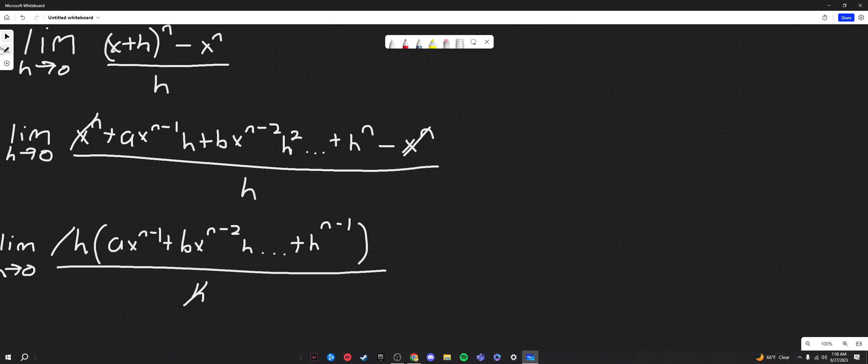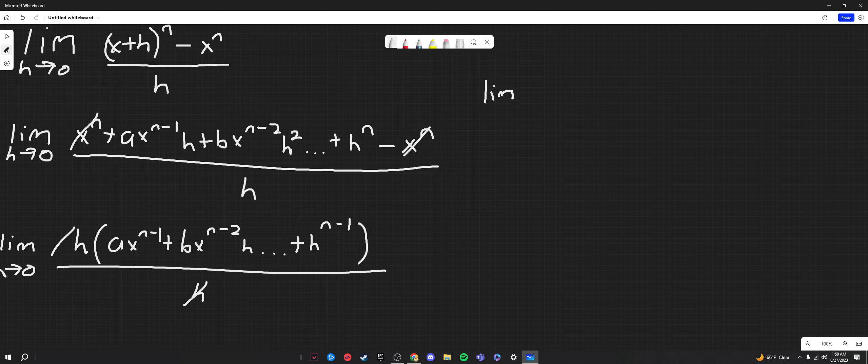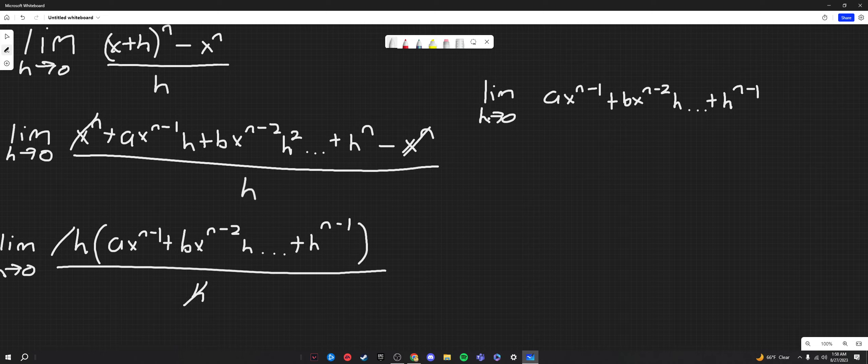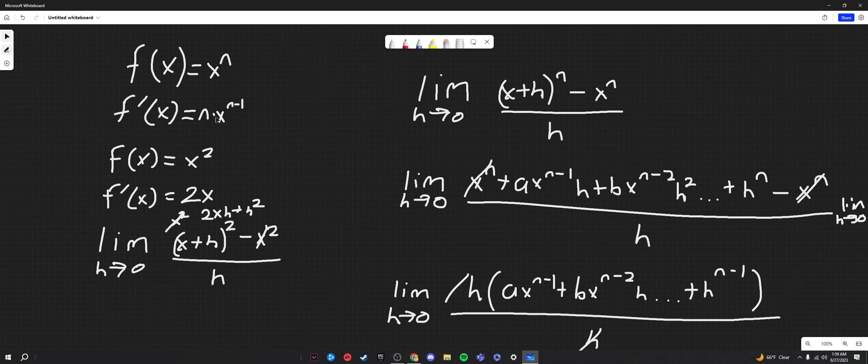So this will leave us with our limit as h going to 0 of a times x to the n minus 1, plus b times x to the n minus 2 times h, plus h to the n minus 1. Of course, since now we don't have to worry about h being in the denominator, this will just go away, all the terms with h's multiplying them, because they're going to 0. And we're left with a times x to the n minus 1. This is what our limit equals.